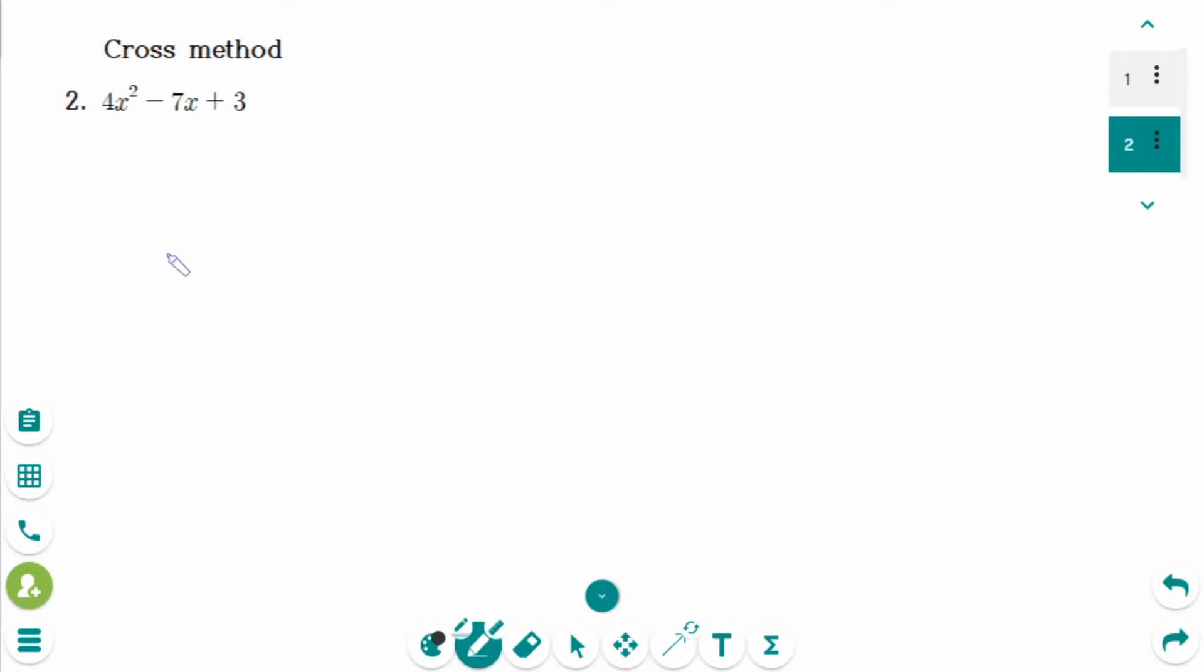This is the next question. First, I will show you the cross method. Let's show the wrong answer first and see how to find the correct way. So 4x squared can be expressed as a product of x and 4x.